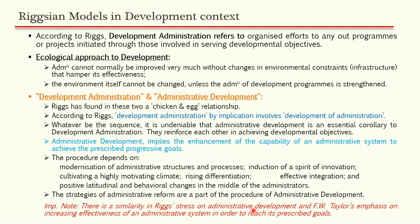There is a similarity between Riggs's stress on administrative development and F.W. Taylor's emphasis on increasing the effectiveness of an administrative system to reach its prescribed goals. This is a potential UPSC question. Both Riggs and Taylor stressed on efficiency and effectiveness. The differences are that one is a classical thinker and one is an ecological thinker — one considers the environment and the other does not.